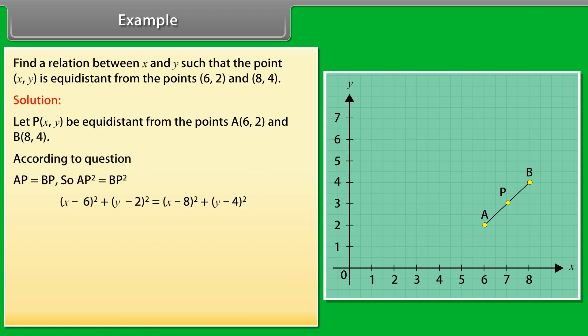X minus 6 whole square plus Y minus 2 whole square equals X minus 8 whole square plus Y minus 4 whole square. By calculating it, we get X square plus 36 minus 12X plus Y square plus 4 minus 4Y equals X square plus 64 minus 16X plus Y square plus 16 minus 8Y.